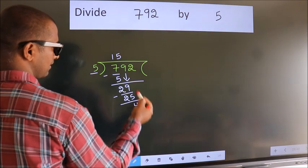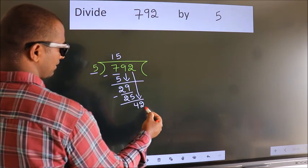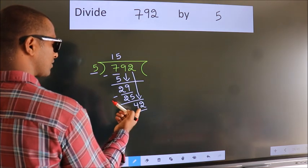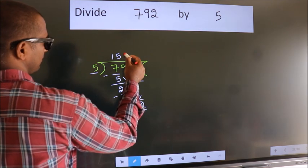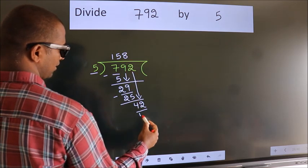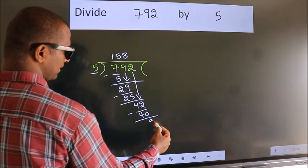After this, bring down the beside number. So 2 down, making 42. A number close to 42 in the 5 table is 5 eights, which is 40. Now we subtract and get 2.